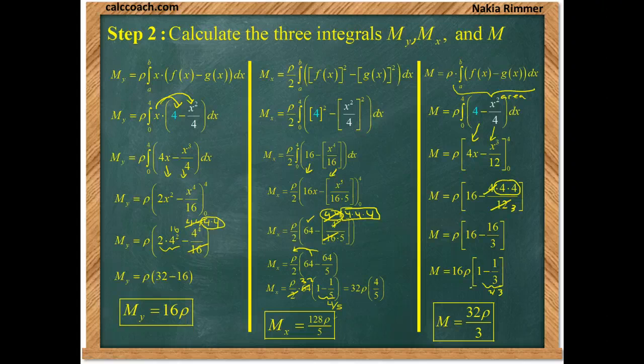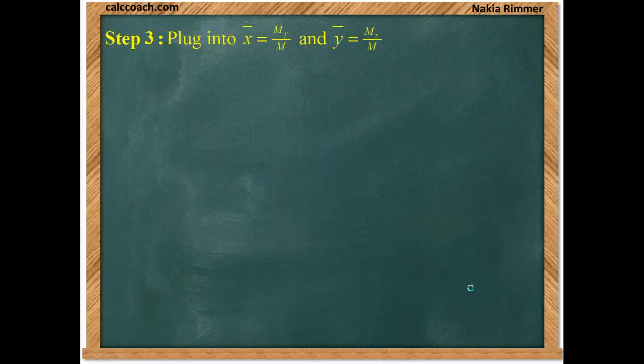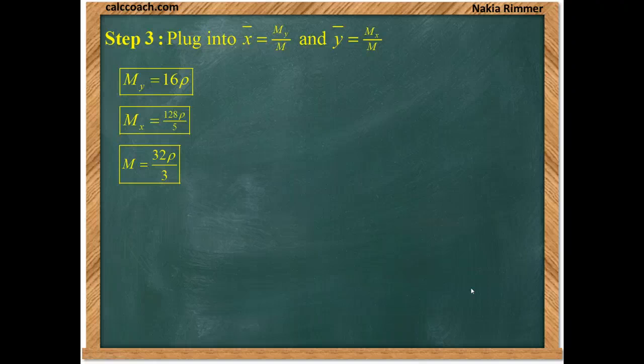Now, we just take these integrals and plug into the x bar and y bar formula. X bar is the moment about the y axis over the mass. Y bar is the moment about the x axis over the mass. We have the previous calculations.